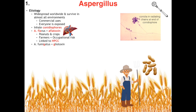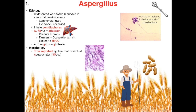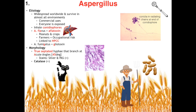A. flavus is extremely carcinogenic and has been linked to hepatocellular carcinoma. A. fumigatus is also associated with peanuts and crops but is not linked to hepatocellular carcinoma. Most importantly, the morphology: Aspergillus has true septated hyphae that branch at acute angles, or 45 degrees. You can remember acute angles because A shares the A in Aspergillus. He is also catalase positive, which we always represent with our cat in lace.